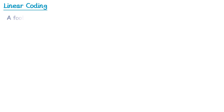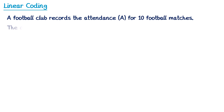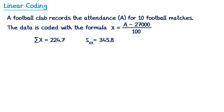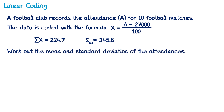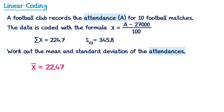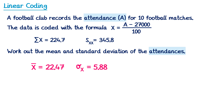Let's try another example. A football club records the attendance for 10 football matches. The data is coded with this formula and we've been given information about x. We need to work out the mean and standard deviation of the original attendances a. First we work out x bar, the sum of x over n. The sum of x is 224.7 and n is 10 matches, so x bar equals 22.47. Then for the coded standard deviation sigma x, using sxx over n: sxx is 345.8 and n is 10. If you type this into the calculator, you'll end up with sigma x equals 5.88.